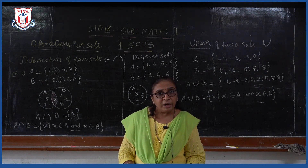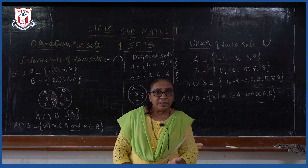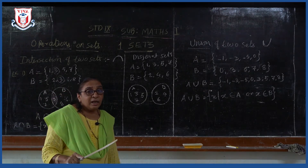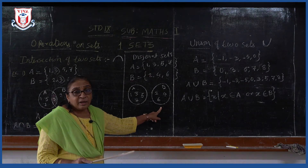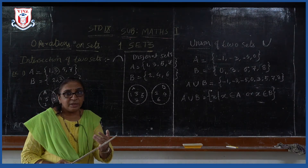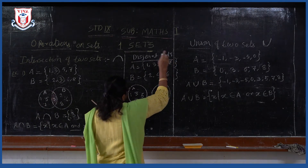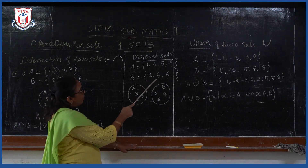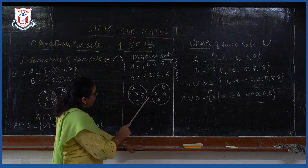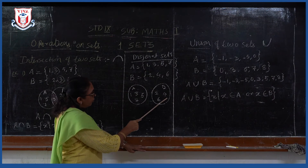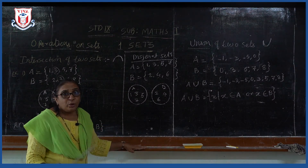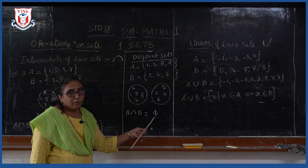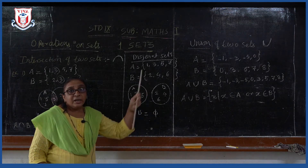If there is no common element in both sets, then the intersection will be the empty set or null set. Disjoint sets: whenever the intersection of sets has no element — that means null set — then they are called disjoint sets. For example, A: 1, 3, 5, 7 and B: 2, 4, 6 — no common element. So A intersection B is null set, and they are called disjoint sets.